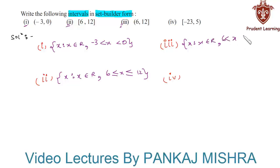and less than or equal to 12. Let us see the last section. Here the given interval is closed on left and open on right, from -23 to 5. Hence it can be written as: set of x